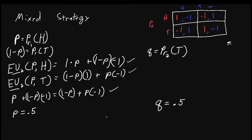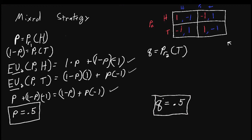When player one randomizes with probability 0.5 and player two also randomizes with probability 0.5, both players are indifferent between their actions. If they're indifferent between their actions, they're indifferent between randomizing. So in this case, both players randomizing with probability 0.5 is a Nash equilibrium in the sense that no player can do better by changing their action — and here their action is the probability with which they randomize. We say p = q = 0.5 is a mixed strategy Nash equilibrium.